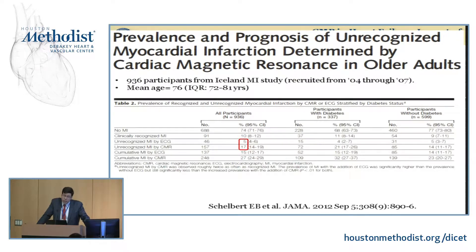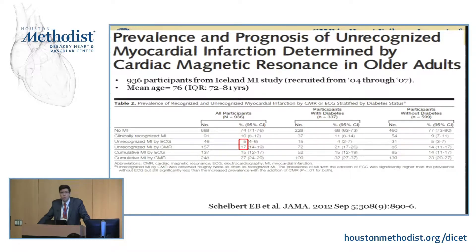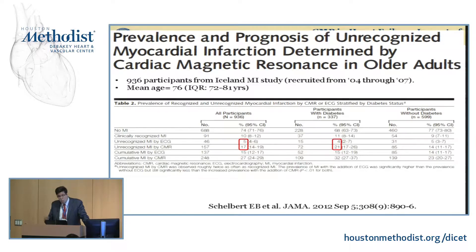This is a very important landmark epidemiological study run by Eric Shelberth, who directs cardiac MR at Pittsburgh — at the time he was at the NIH — looking at the Iceland study. 936 participants recruited from 2004 to 2007 were asked whether they remembered having had a heart attack, and answered questions about their diabetes status. The clinically recognized infarct rate was about 10% in the overall population, but when they examined EKGs and CMR with gadolinium, this more than doubled. Patients with diabetes, thought to have 11% prevalence, actually had 25% unrecognized myocardial infarction — much more than those without diabetes.